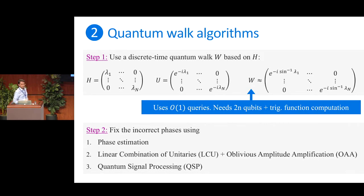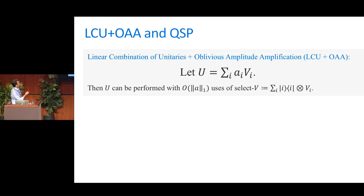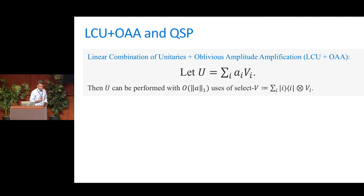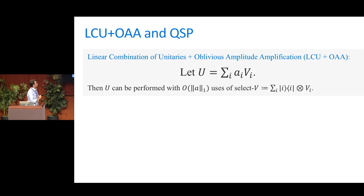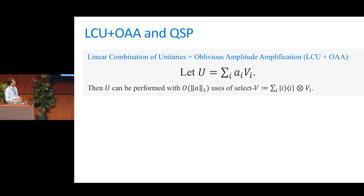LCU+OAA allows a simple operation: if the unitary U you want to implement can be written as a linear combination of unitaries V_i with coefficients a_i, this technique gives you a method of performing U if you can perform each V_i. So if the V_i's are easy to implement — maybe with low query or gate complexity — you now have a method of performing U. If you can write your target unitary as a linear combination of known, easy-to-implement unitaries, you're good to go.